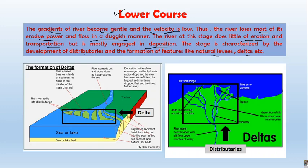A delta is formed when sediments are deposited at the junction of a sea and a river, or at the mouth of the river. Because the river deposits a lot in the lower course, it gets divided into small channels known as distributaries. Unlike tributaries, which originate in a mountain and join the river, a distributary has its origin from the river itself.